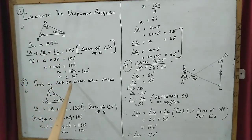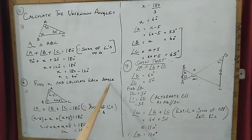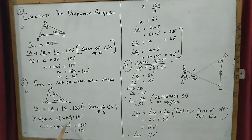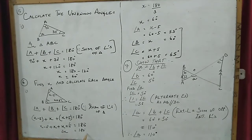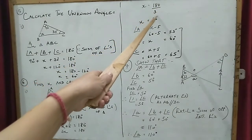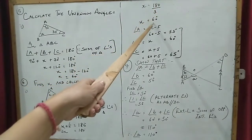The next problem requires finding x and calculating each angle. Using the angle sum property: angle A plus angle B plus angle C equals 180. The angles are (x minus 5), x, and (x plus 5). Removing the brackets: x minus 5 plus x plus x plus 5 equals 180. The plus five and minus five cancel, leaving three x equals 180, so x equals 60 degrees.